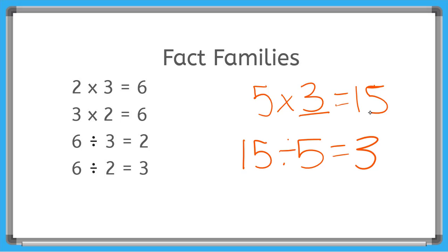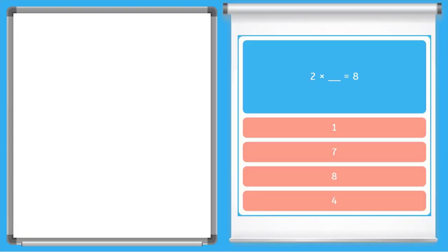Let's apply that with a few problems from our game. My first problem here I have 2 times an unknown equals 8. So what I want to do to solve for this unknown is flip these numbers around into a division problem. 8 divided by 2 is equal to what? 8 divided by 2 equals 4.